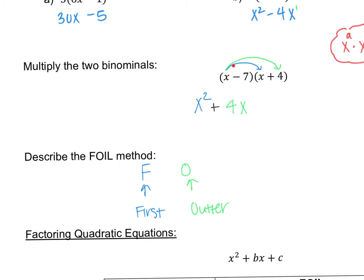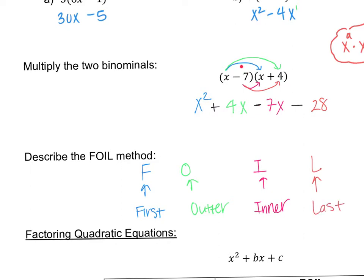After distributing x to both terms in the second parenthesis, we move to the negative 7. Negative 7 is the inner term, and we multiply it by x, also the inner term. So negative 7 times x is negative 7x — that's I for Inner. Now negative 7 still needs to distribute to the positive 4. Negative 7 times positive 4 is negative 28 — that's L for Last, because these are the last terms in each parenthesis.